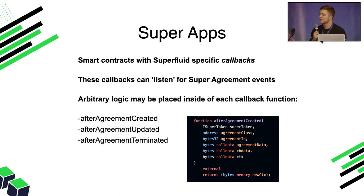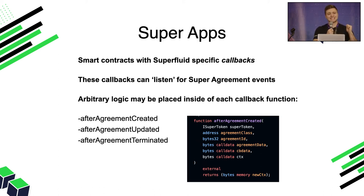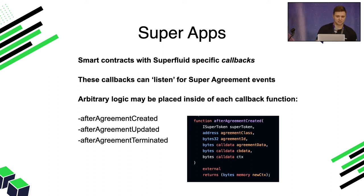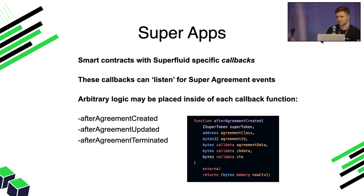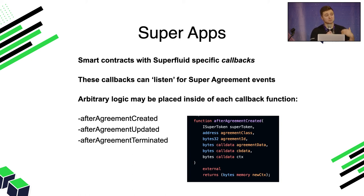One category of advanced things you can do with cash flows is build super apps. A super app is a smart contract with specific callbacks that listens for actions within the Superfluid protocol. If you deploy a super app contract and send a stream into it, you can have callbacks that run every time that stream is opened, updated, or deleted. A cool example in our examples repo is called the tradable cash flow — it's an NFT that sends 100% of the flow it receives to the NFT owner. Any time you update the flow it updates the outflow to the owner, and when the NFT is transferred all outflow transfers to the new owner. You can imagine really interesting revenue-based financing and DeFi applications building on subscriptions or payments with super apps.